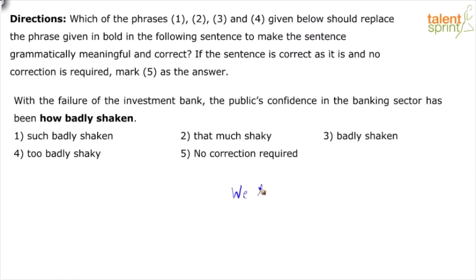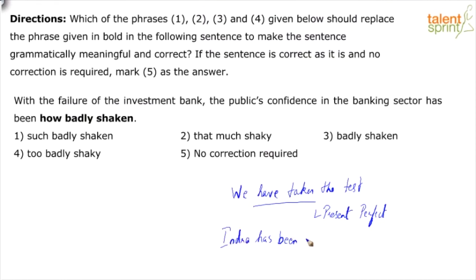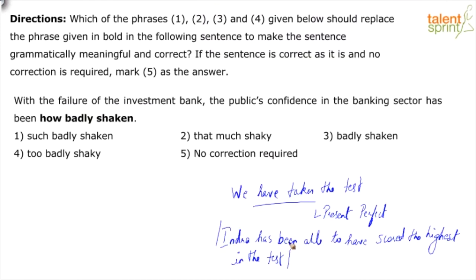When we say 'we have taken the test' — this is present perfect tense. However, present perfect tense is also depicted with 'being.' For example: 'Indra has been able to have scored the highest in the test' — this is also present perfect tense. The form might differ but you are still talking about an action performed during a period that is not yet finished. The test is probably still on, but so far she has scored the highest. This is an example where 'being' can also be part of the present perfect tense.